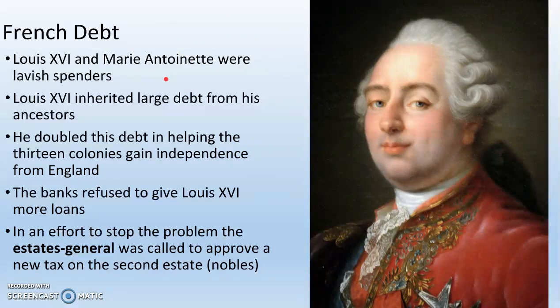Louis XVI — his great-great-grandson of Louis XIV — and his queen, Marie Antoinette, were lavish spenders. They spent lots and lots of money building up the Palace of Versailles, buying clothing and ridiculous food. Louis XVI also inherited a large amount of debt from his ancestors, especially Louis XIV. He doubled this debt trying to help the 13 American colonies gain independence from England, which was successful — that's why the United States is a country. But eventually the banks refused to keep giving money to Louis XVI.